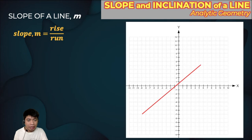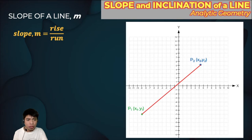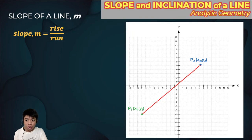For example, we have a line and we know two points where the line passes through — point 1, which has coordinates x1 and y1, and another point, which is point 2, with coordinates x2 and y2. We can compute the slope of this line by computing the rise and the run.